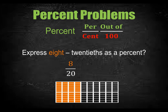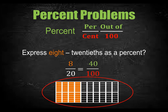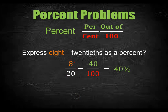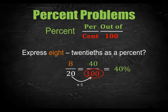To express this fraction as a percent, it needs to be expressed out of 100. To divide this figure into 100 equal parts, each of the 20 parts should be divided into 5 more parts, because 5 times 20 equals 100. Since the figure now has 100 equal parts, counting the shaded parts — 5, 10, 15, 20, 25, 30, 35 and 40 — gives us 40 hundredths. The denominator of 8 twentieths can be converted to 100 by multiplying by 5, and the same number is multiplied with the numerator, so 8 times 5 equals 40. Therefore, 40 hundredths is the same as 40 percent.